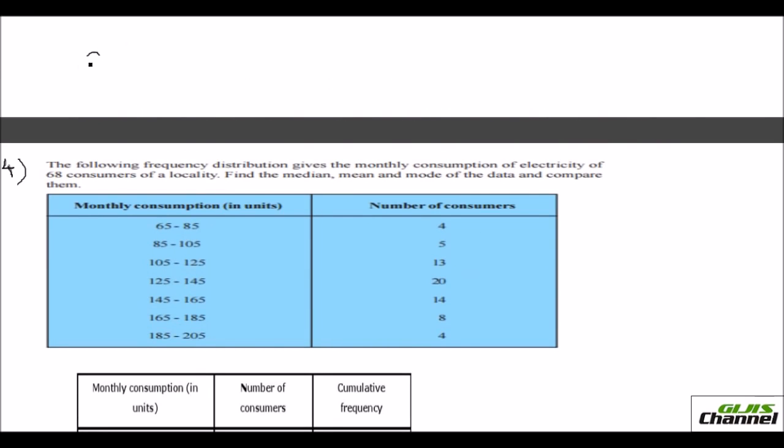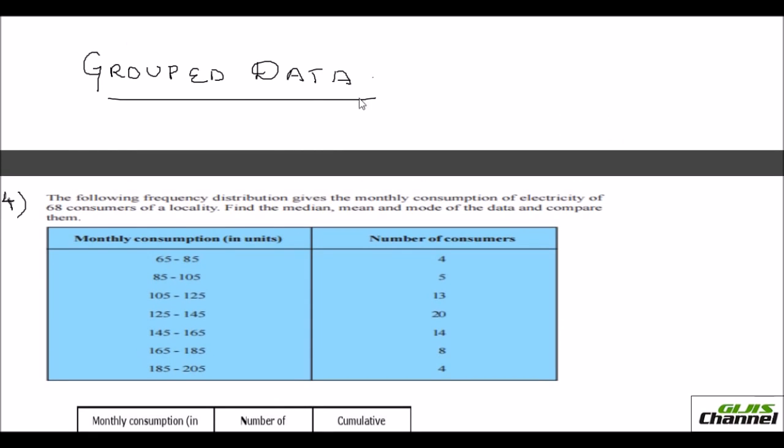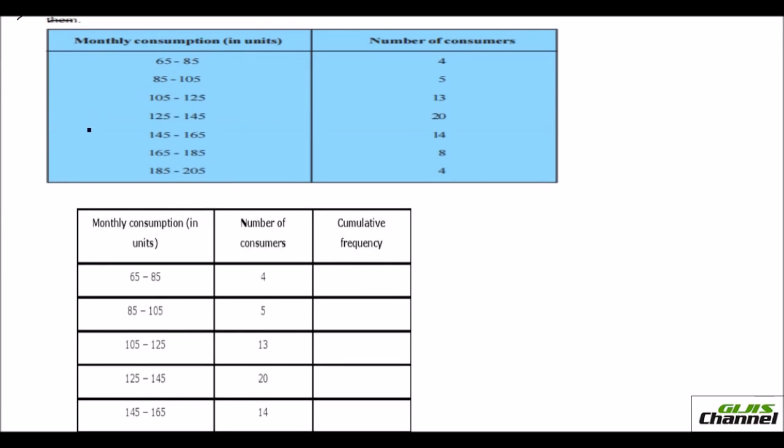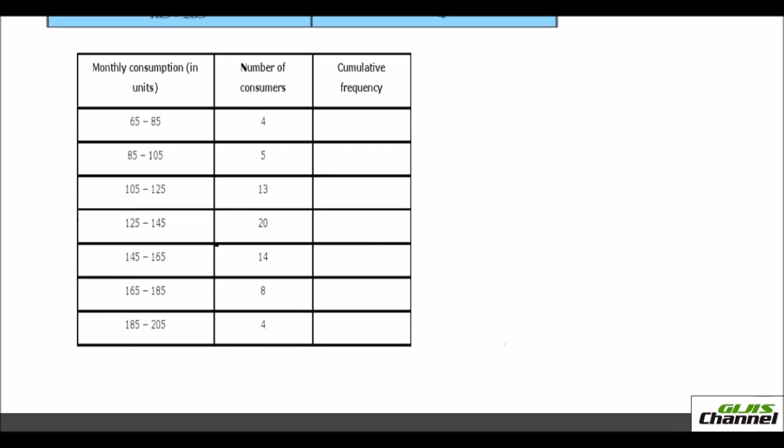Now I am going to do the grouped data. So long we were doing ungrouped data. Now this is grouped data which you are doing. Here, a question has been given. The following frequency distribution gives the monthly consumption of electricity of 68 consumers of the locality. Find the median of the data. This is what we need to do now. Just find the median. To find the median, I have rewritten this because since you can see the class interval is in the ascending order only. So I needn't change anything. I have just copied down those two columns. This is my answer. And I have a third column to find the cumulative frequency.